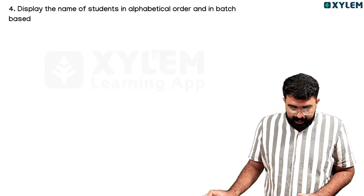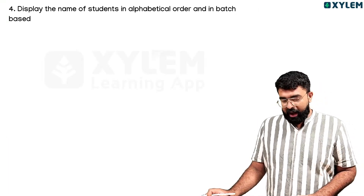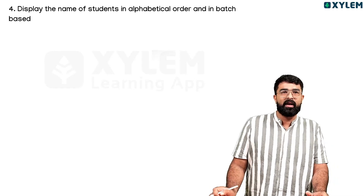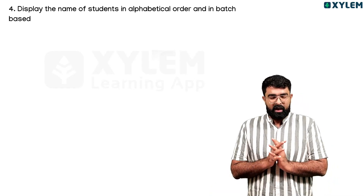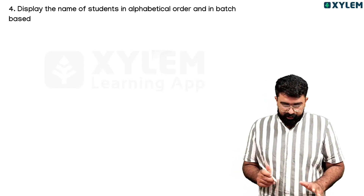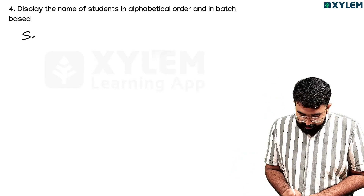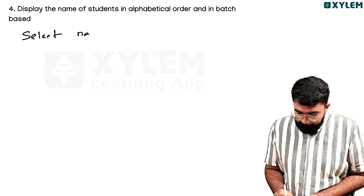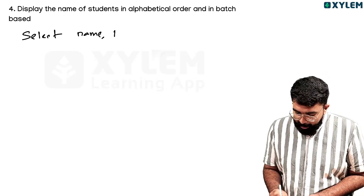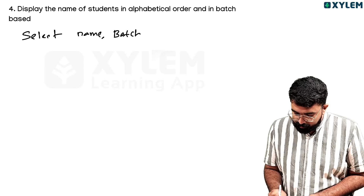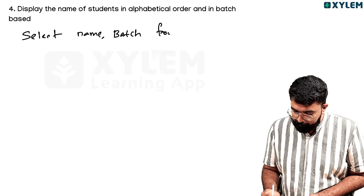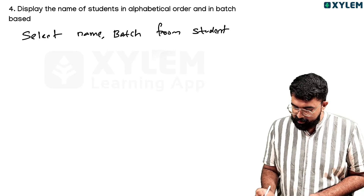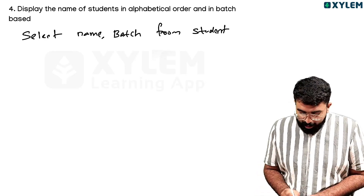Display the names of students in alphabetical order and batch-based order. SELECT from student ORDER BY name, batch to sort in alphabetical order.